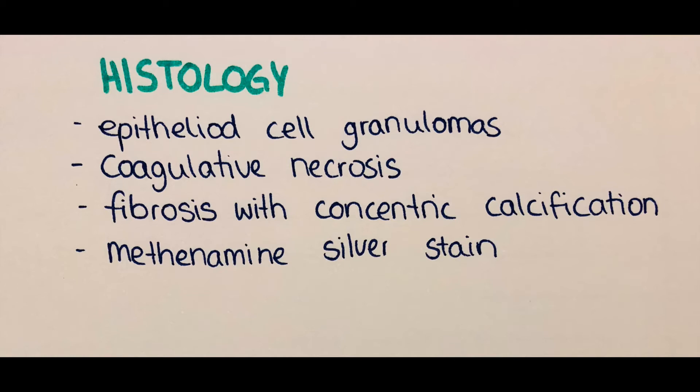There are different forms of histoplasmosis. First, the acute primary infection occurs when spores are inhaled for the first time and the immune system can fight the infection by itself. However, if not all cells are destroyed, this may lead to a latent infection where spores are present within the lung but there is no active inflammation — they reside within macrophages — and as soon as the immune system weakens, a secondary infection occurs.